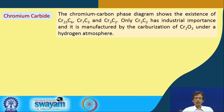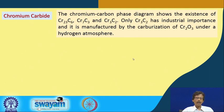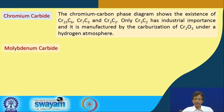Cr₃C₂ can be manufactured by carburization of chromium oxide (Cr₂O₃) using graphite as the carbon source under a hydrogen atmosphere. This leads into the next material, molybdenum carbide.